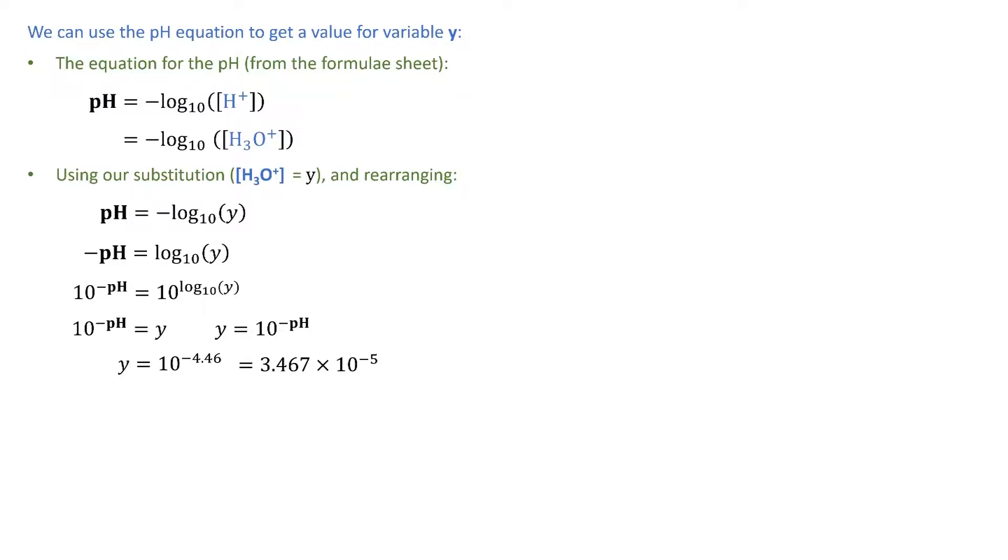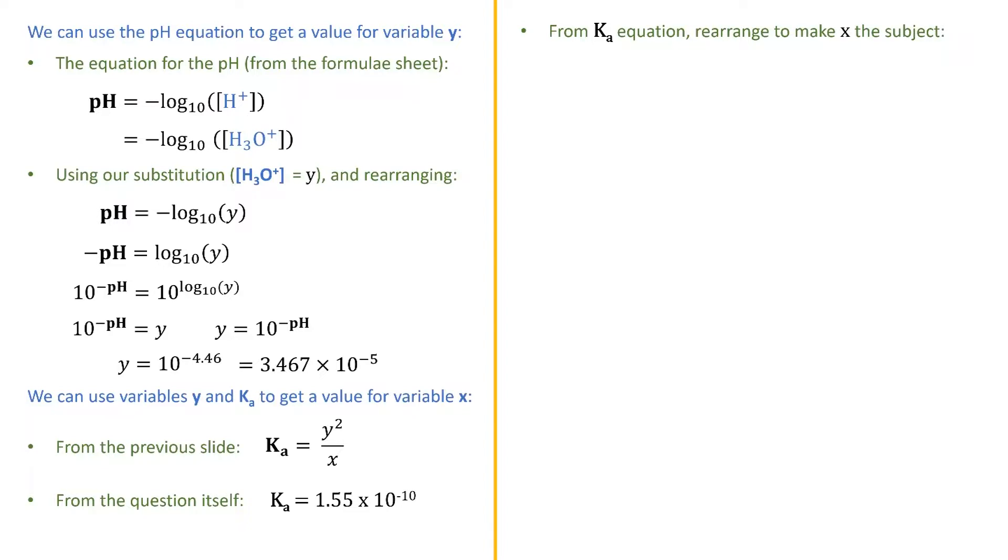We can also find a concrete expression for X by using the values we have for Y and Ka. From the previous slide, we know that Ka is just Y squared on X, and from the question itself, we know that Ka is equal to 1.55 times 10 to the negative 10. Therefore, from this, we can rearrange to find a value for X. Starting with the equation, we can multiply both sides by X. This eliminates X from the right-hand side. Next, we can divide each side by Ka, which in this case eliminates Ka from the left-hand side, and leaves us with this. An expression for X with respect to Y and Ka, which we have values for.